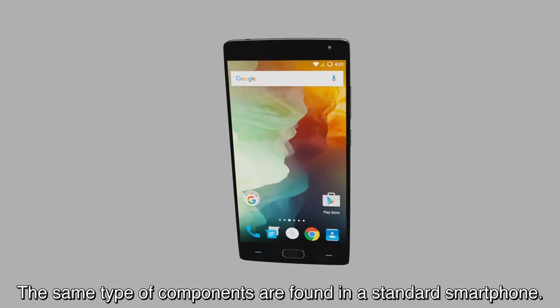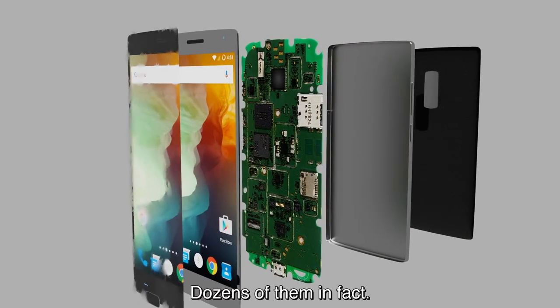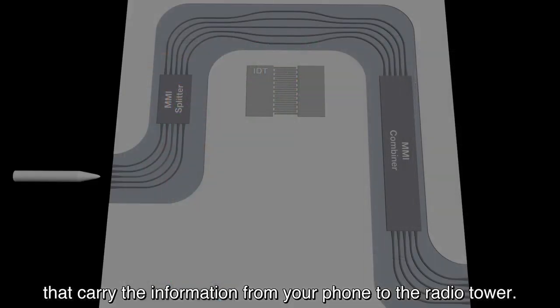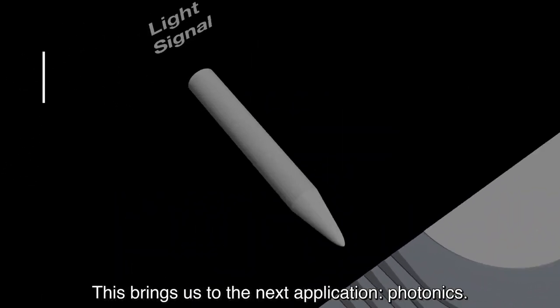The same type of components are found in a standard smartphone. Dozens of them, in fact. These are constantly used to filter and process the signals that carry the information from your phone to the radio tower. This brings us to our next application, photonics.